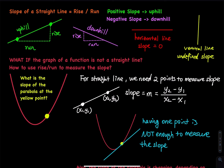This is for straight lines, and you studied this back in algebra. So in calculus, we are going to do something a little more challenging. What if I don't have a straight line? What if I have a parabola? So what if the graph of a function is not a straight line? How do you use rise over run to measure the slope?